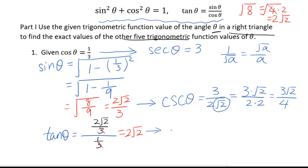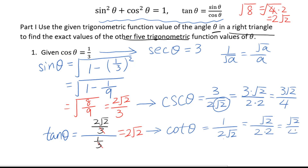For cotangent theta, flip tangent theta: cotangent theta equals 1 over 2√2. Rationalizing gives √2/2, and carrying the factor gives cotangent theta equals √2 over 4. In this way we have figured out all other 5 trigonometric function values of theta.